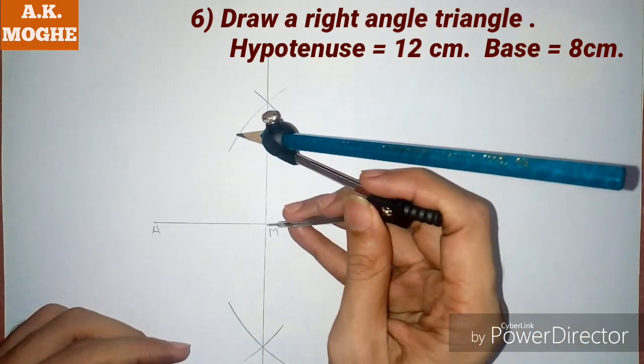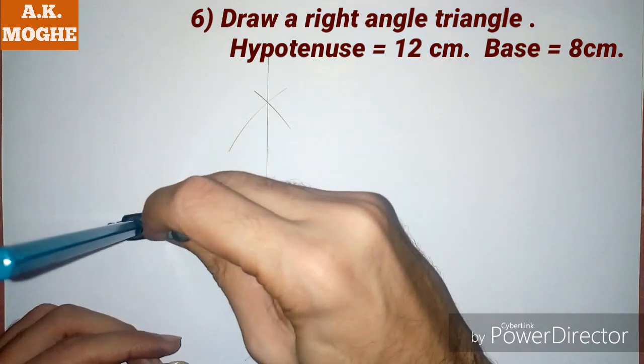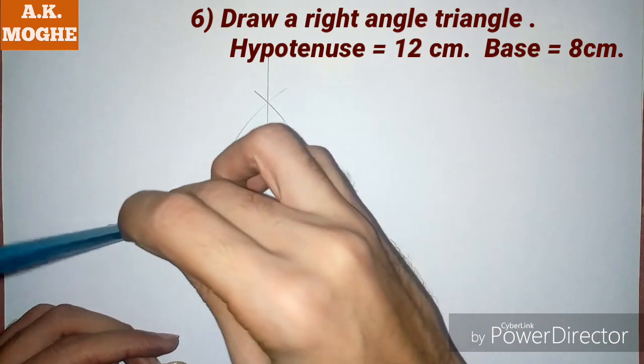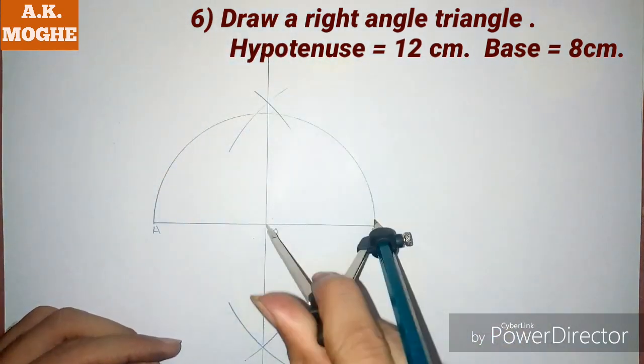Then take a radius of AM and mark a semicircle.